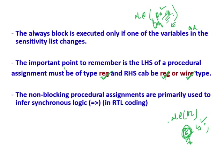Normally, to implement a sequential logic design, we use non-blocking assignment. There are two types of procedural assignment: blocking assignment and non-blocking assignment. Normally when writing RTL code, we use non-blocking assignment to implement sequential logic. This non-blocking assignment is used to implement sequential logic — that we have to remember.